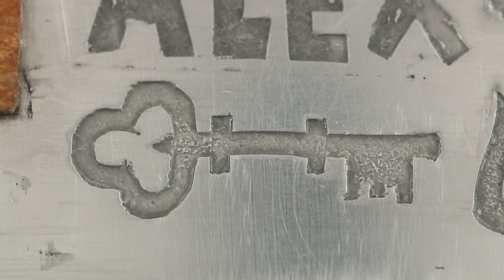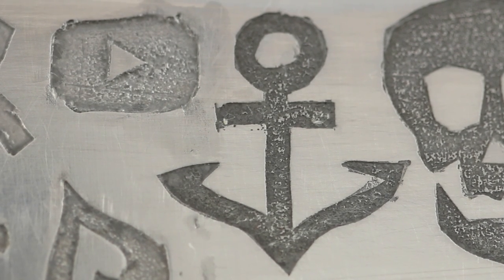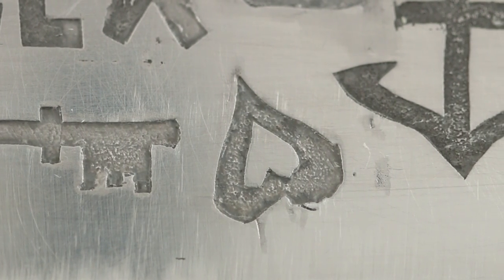Speaking of keys, there is one key right here, which is a symbol of control over destiny. Finally, there is an anchor to keep my feet on the ground, and also a heart, because this whole story is just about love.